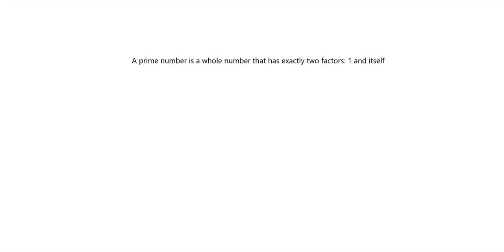We're going to look at prime factorization as a way to help us find the lowest common multiple and highest common factor. But first let's do a quick reminder of what prime numbers are. The definition of a prime number is that it's a whole number that has exactly two factors: one and itself.